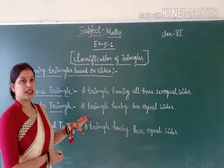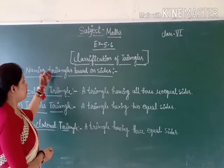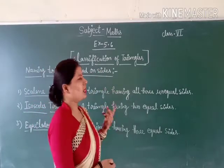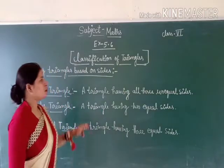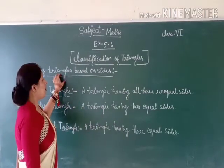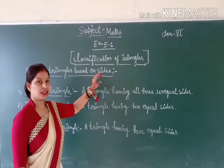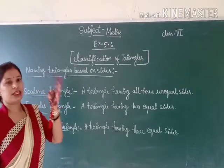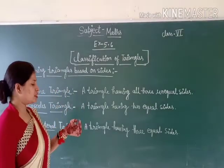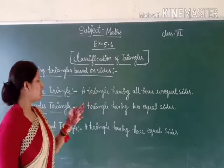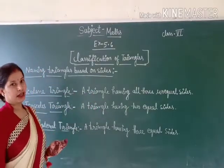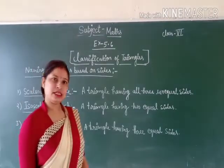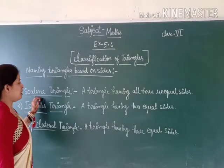So now we have to talk about something new — classifying triangles based on sides, not angles. Now focus: based on sides, our first triangle type is the equilateral triangle, second is the scalene triangle, and third is the isosceles triangle.